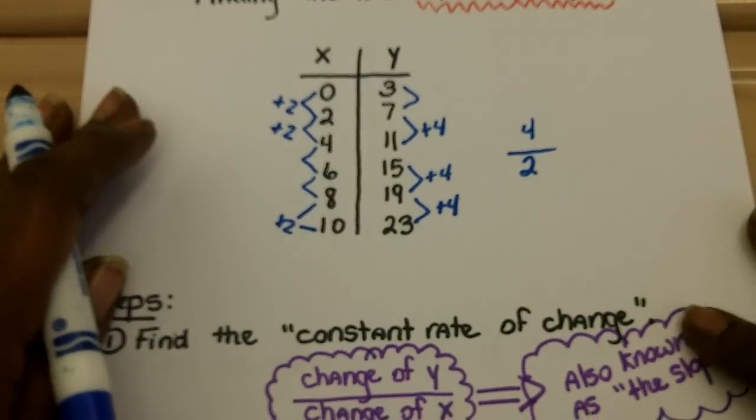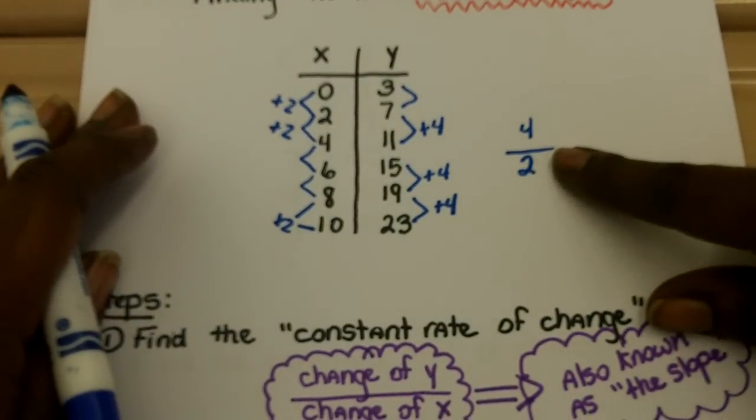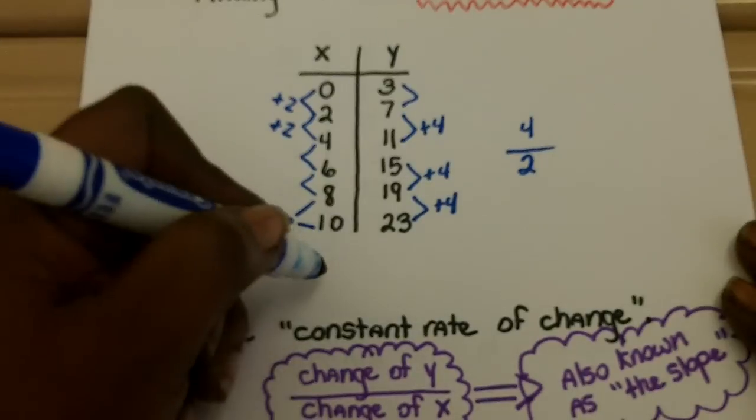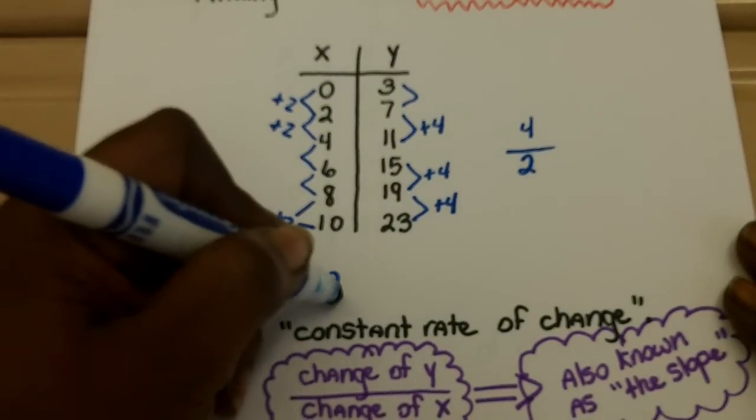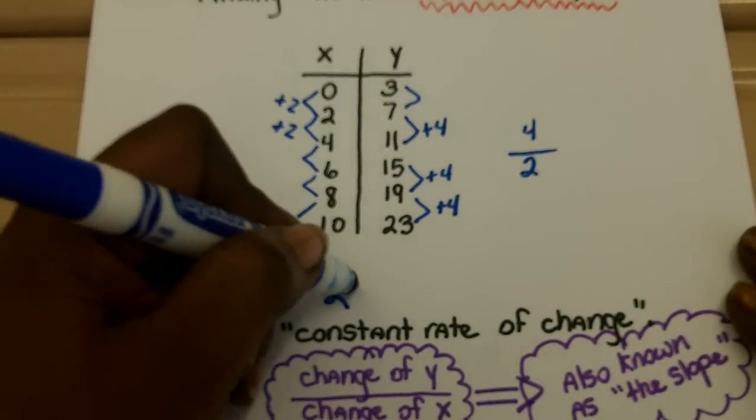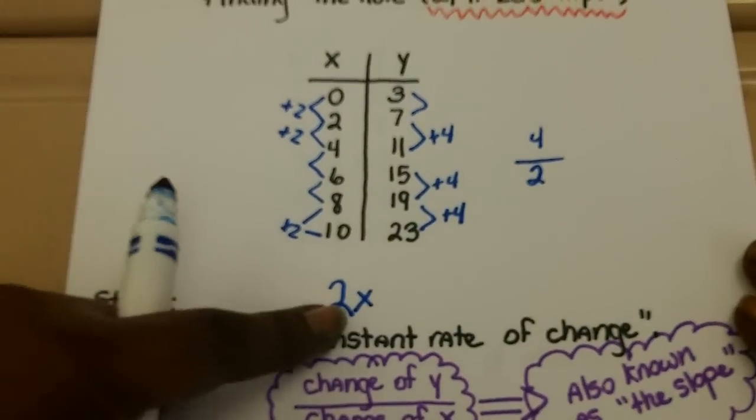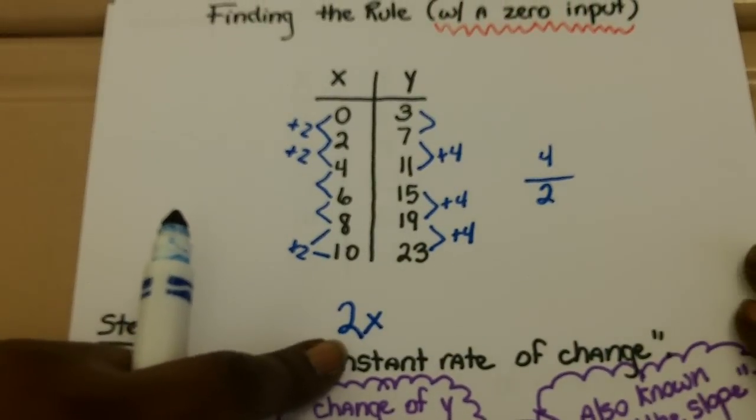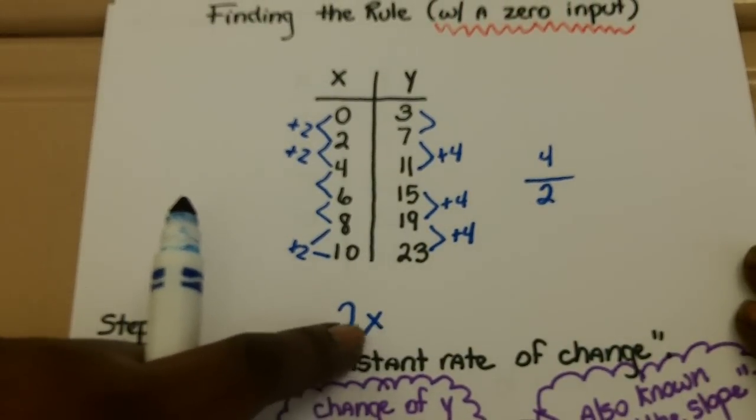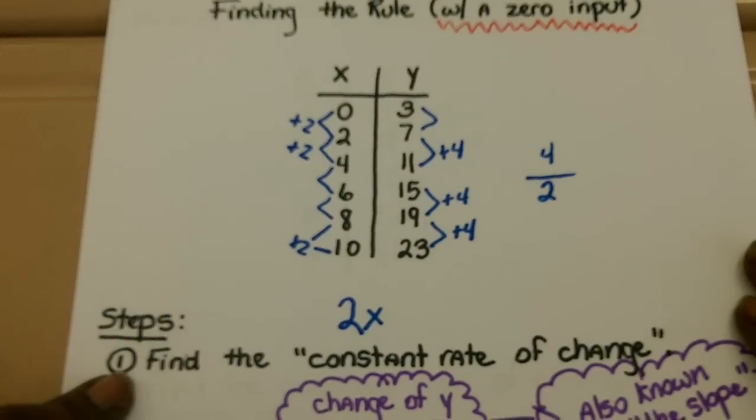Therefore, your constant rate of change, change of y divided by change of x, is 2. And this 2 is what we're going to multiply by every single input. So 2 times x is part of the rule or the function we're trying to find.